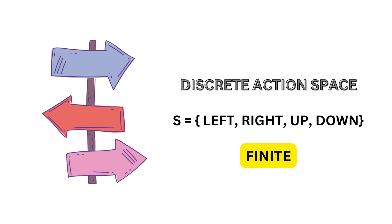In the same game example — left, right, top, bottom — the count is finite, so we call it discrete action space.